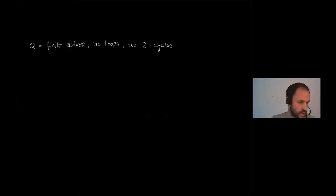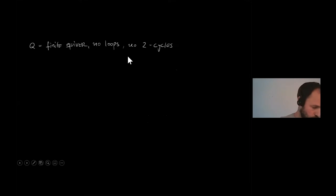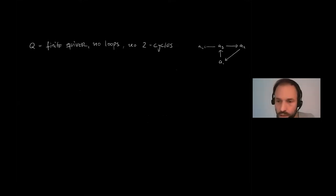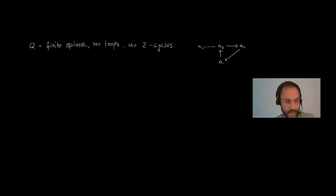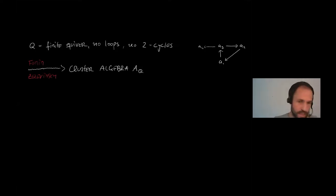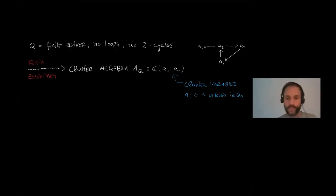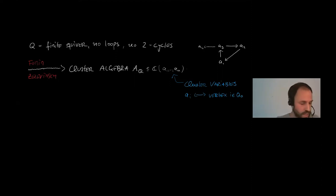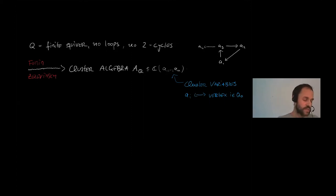We start with a finite quiver Q and we don't allow loops or two-cycles. Here we have such an example — there can be cycles but two-cycles are forbidden, as are one-cycles. Due to this setup, there is an associated cluster algebra due to the work of Fomin and Zelevinsky, and we denote this cluster algebra by A(Q). This cluster algebra lives inside the function field generated by the initial cluster variables, which are indeterminants associated to the vertices.